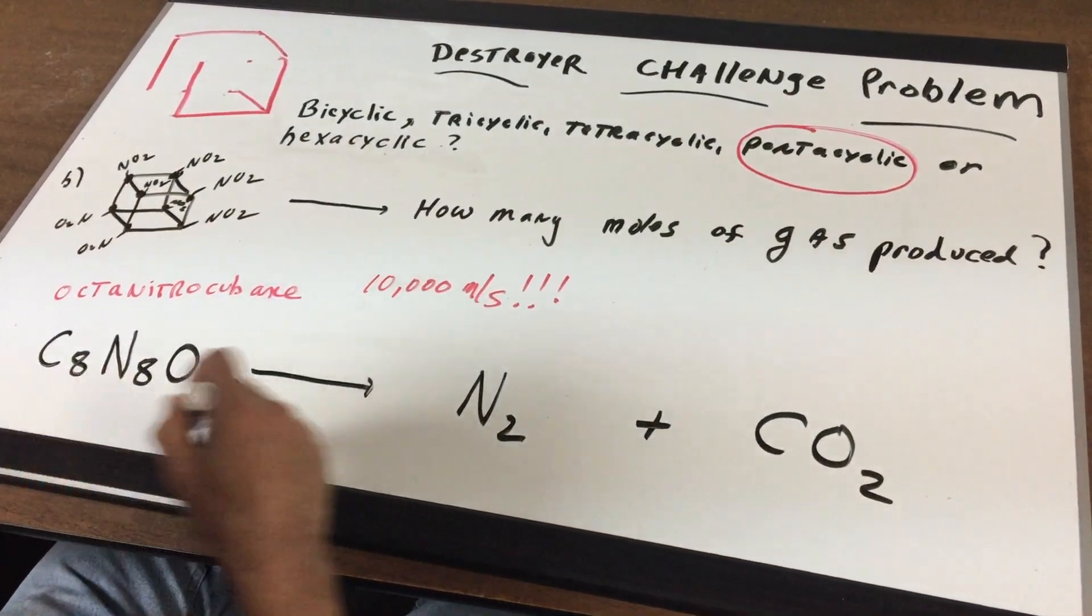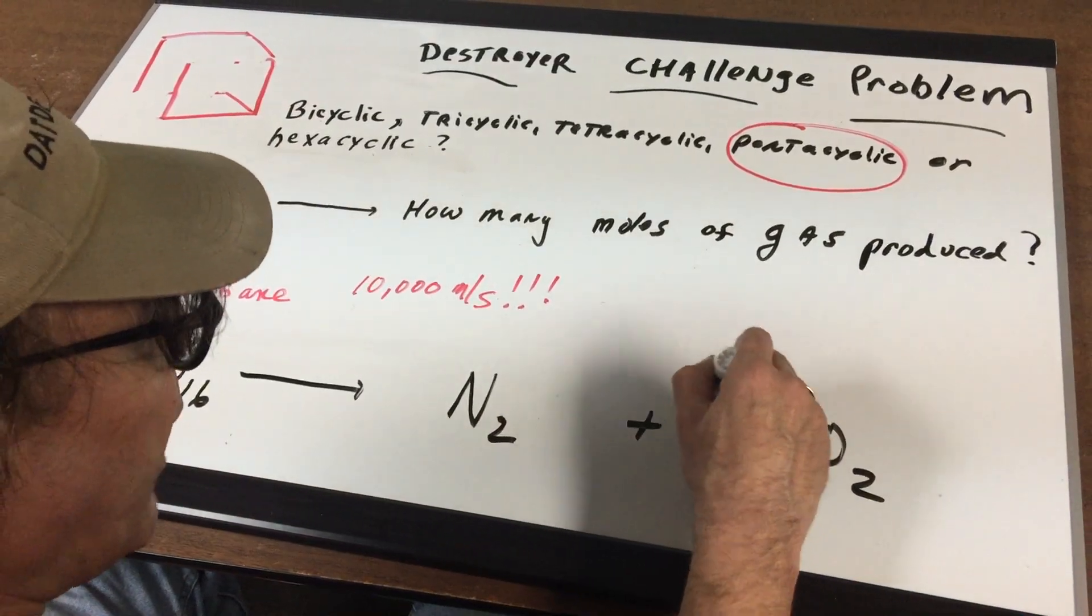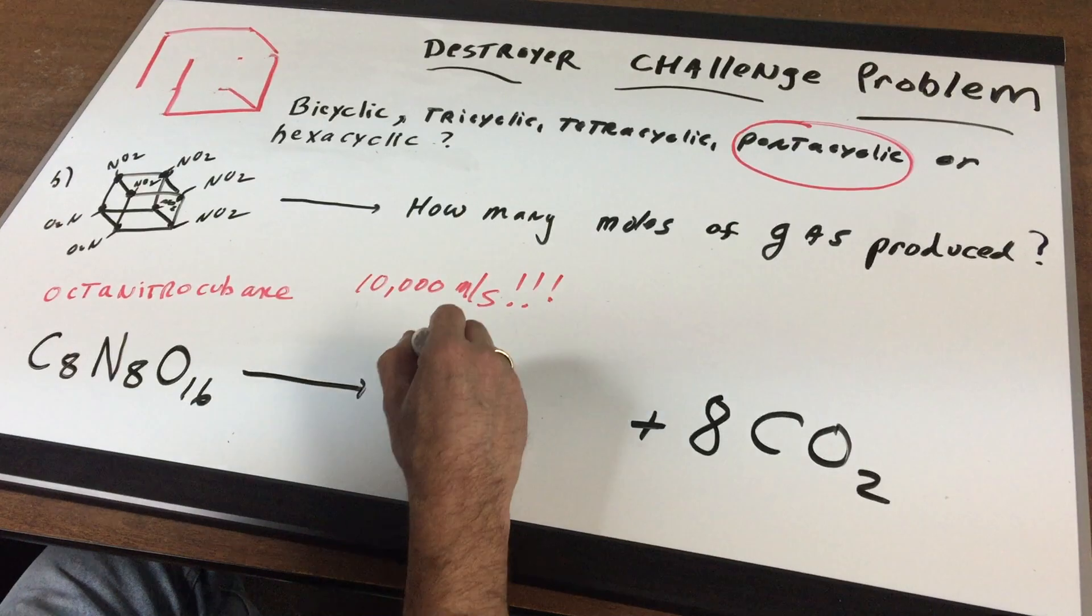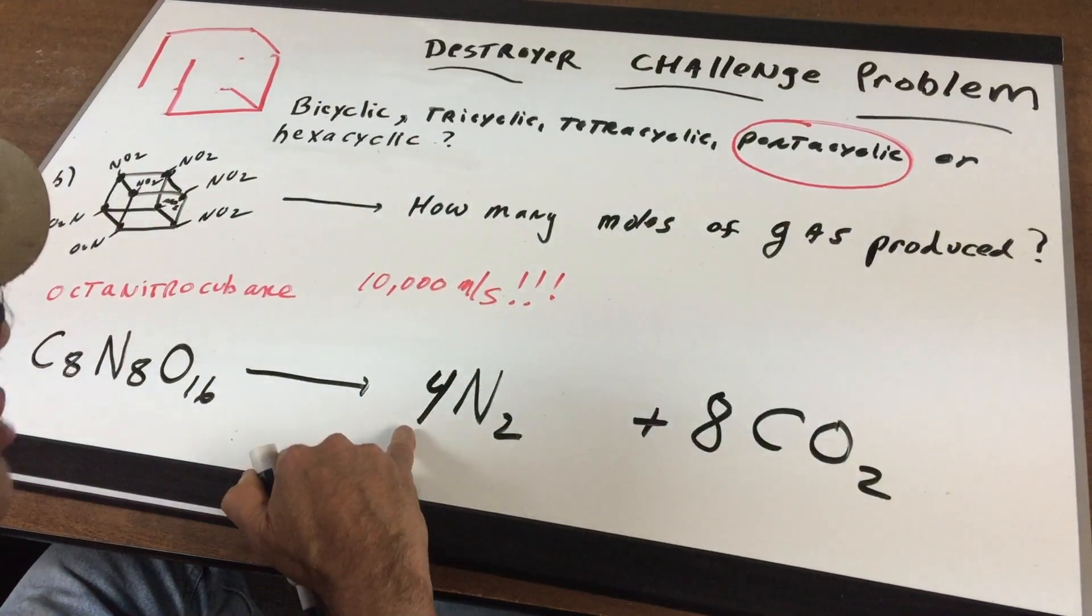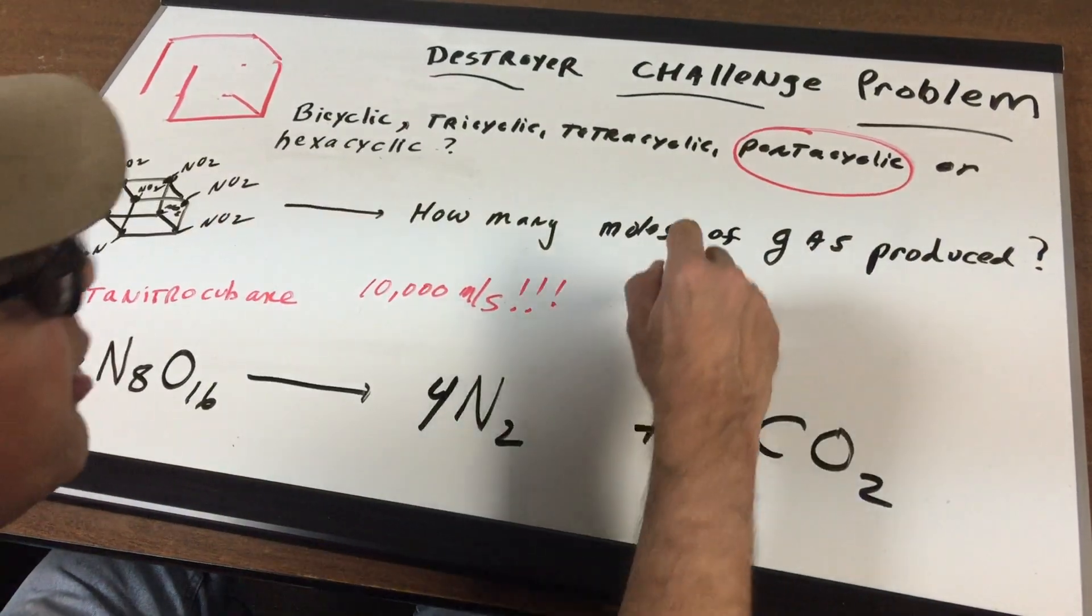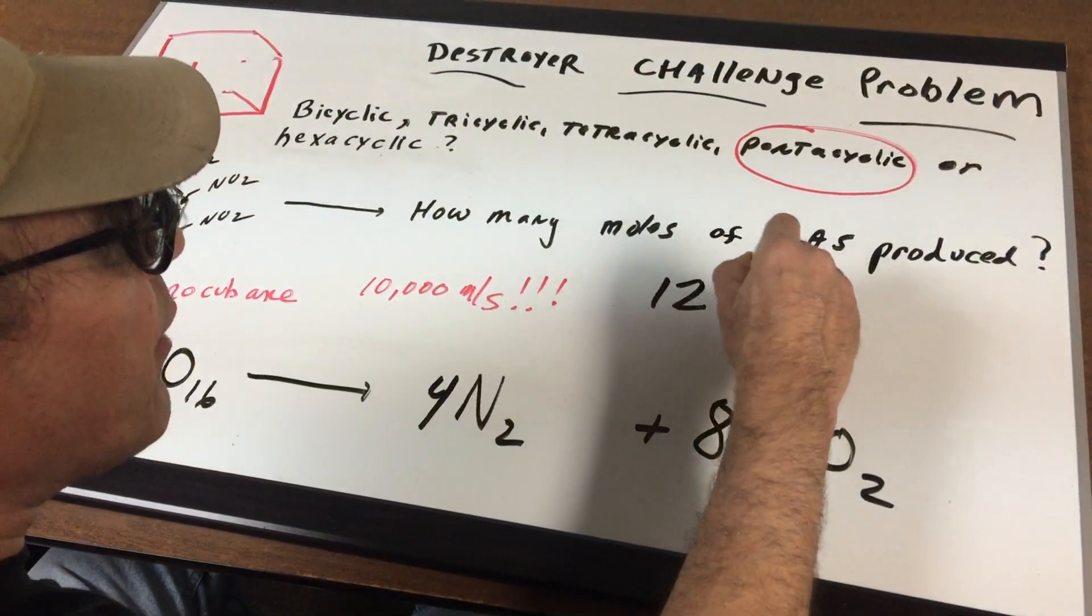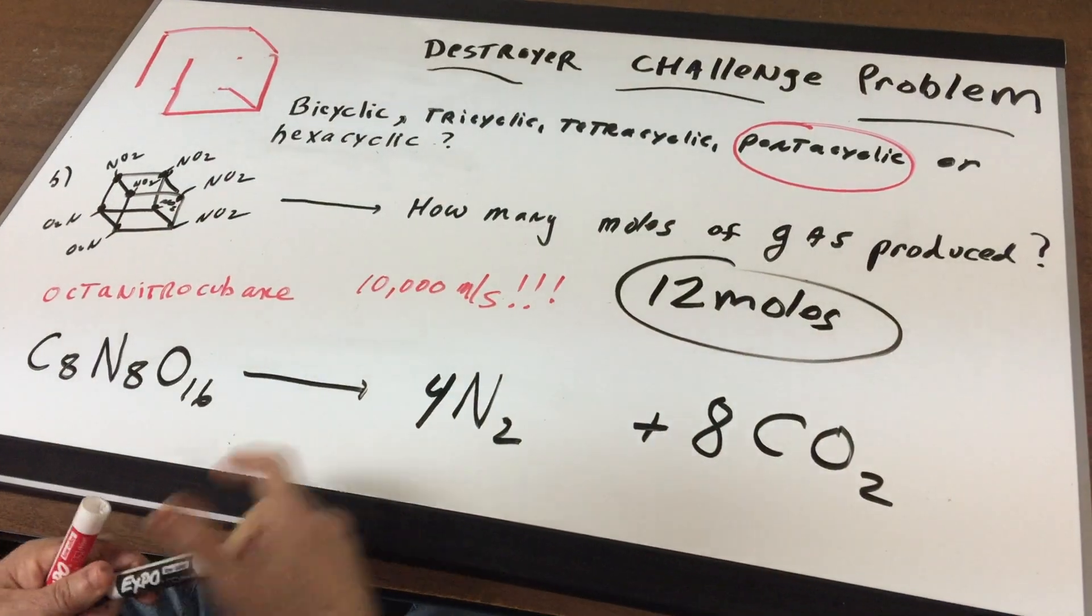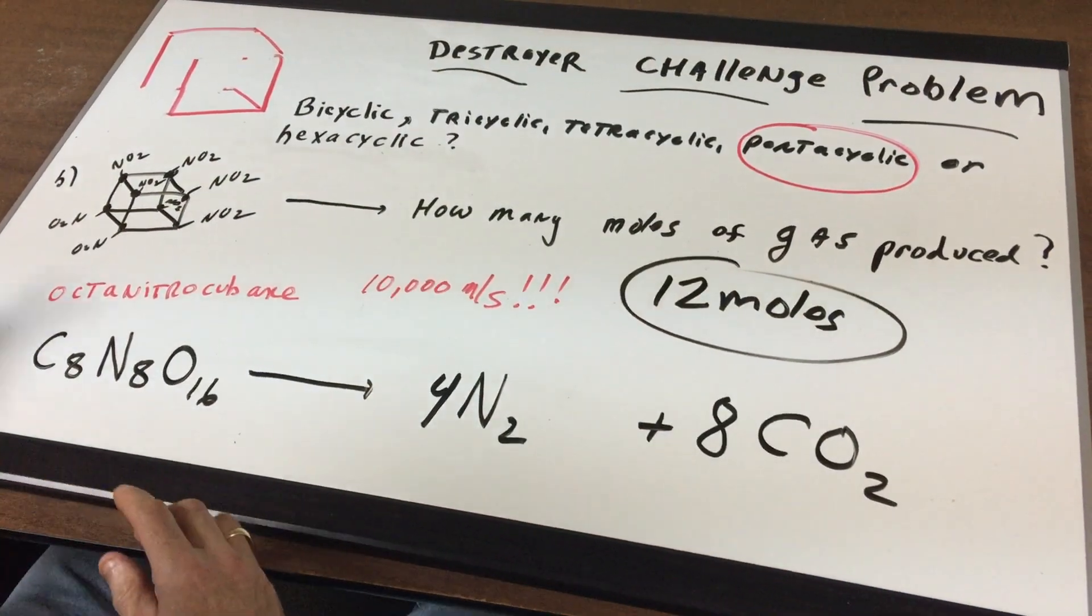There's eight carbons here. So I'm going to put an eight in front of here. There is eight nitrogens and we have two, and that's four. So we're going to get four moles of nitrogens and eight moles of CO2 gives me a total of 12 moles of gas.